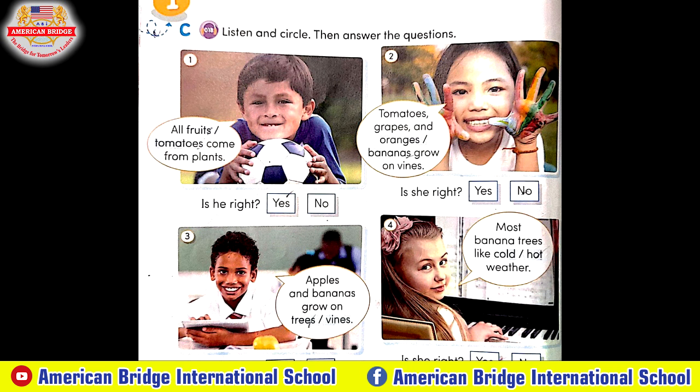Number 1: All fruits come from plants. Number 2: Tomatoes, grapes, and bananas grow on vines. Number 3: Apples and bananas grow on trees. Number 4: Most banana trees like hot weather.